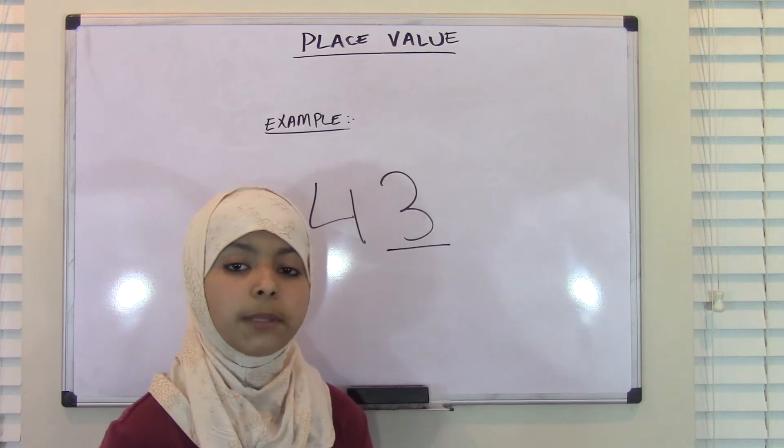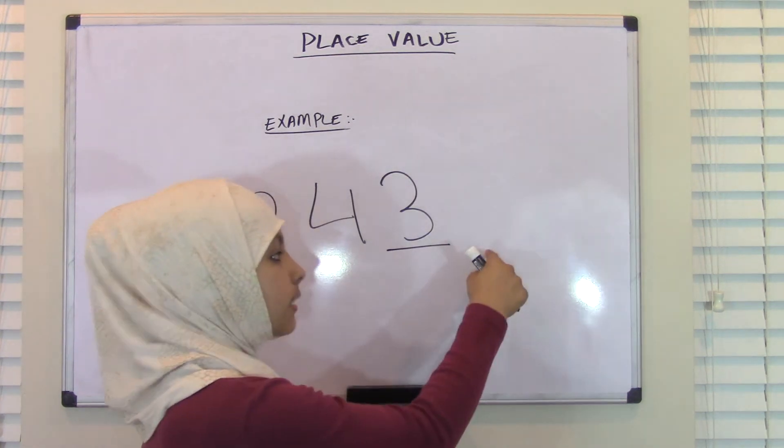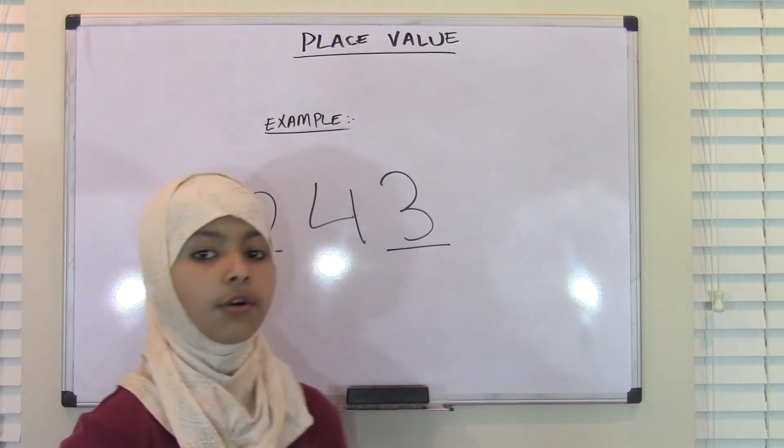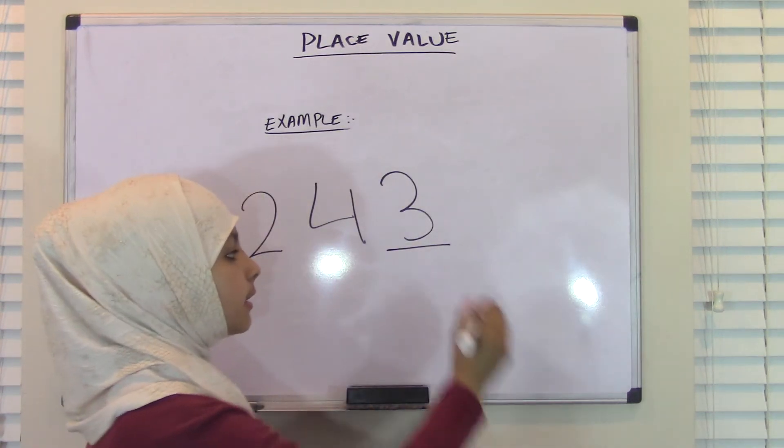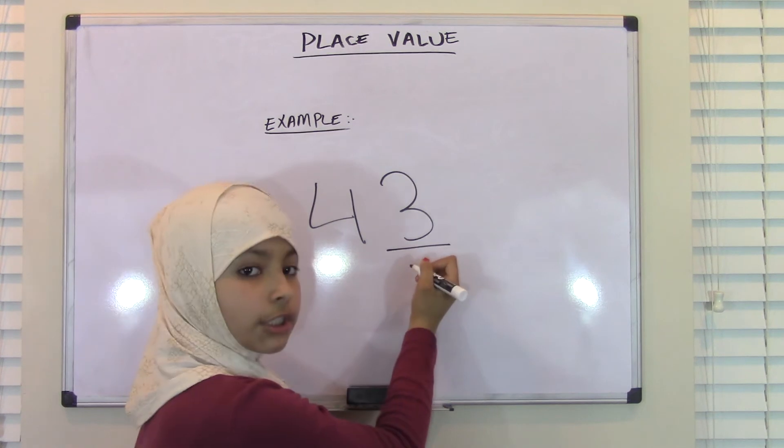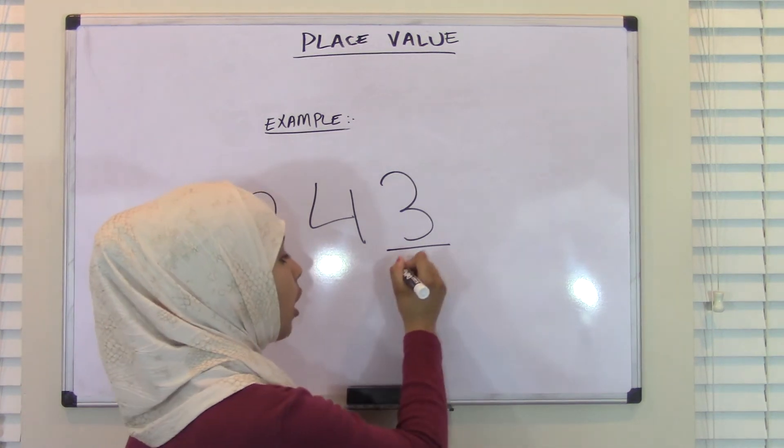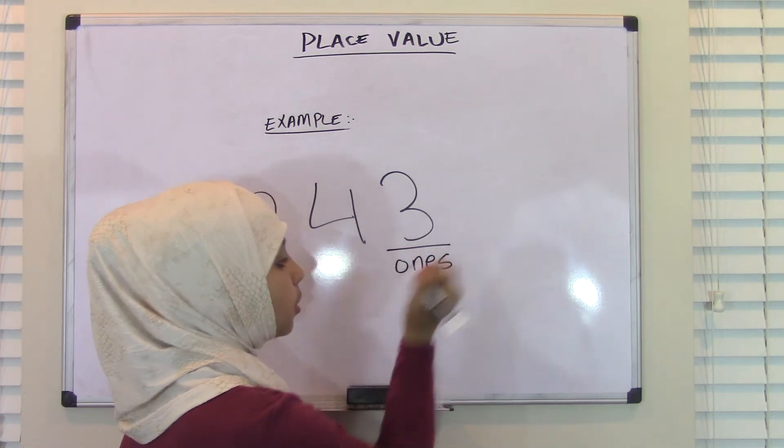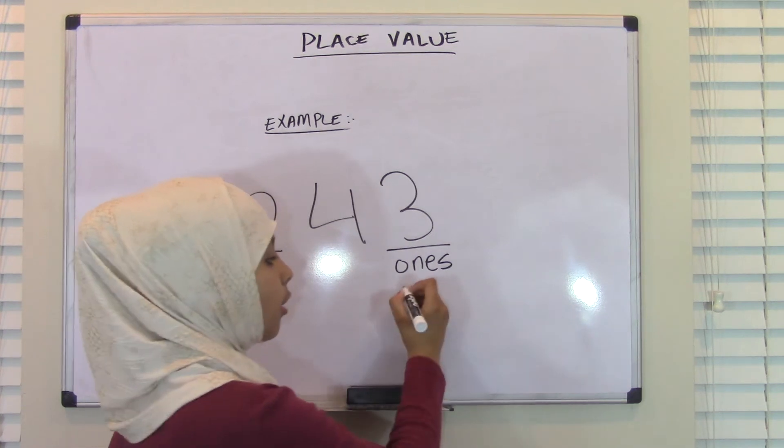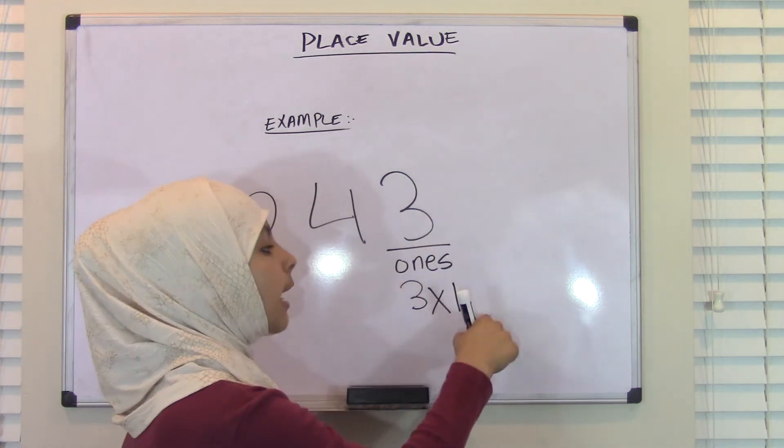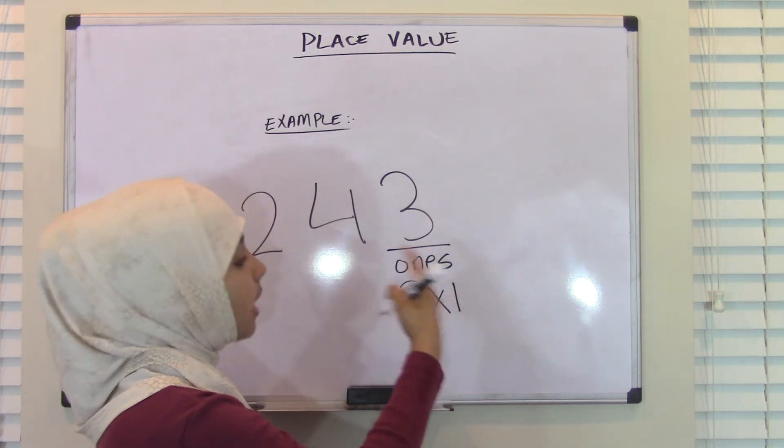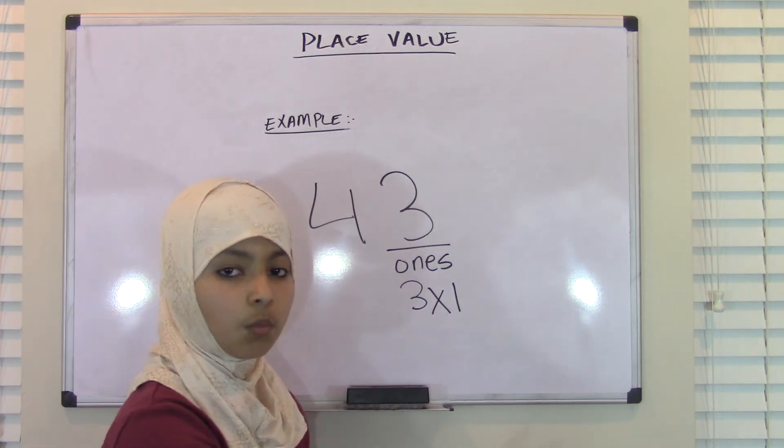Always remember that when we're doing place value, we start from right and we go to left. So, we always will start off with 1's. That means that 3 has the position or the place value of 1's. So, we will write this as 3 times 1 because we can only go from 0 to 9 in the 1's place.